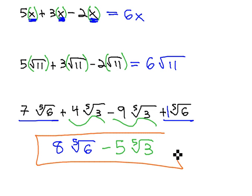And we have our final answer: 8 times the 5th root of 6 minus 5 times the 5th root of 3. We cannot simplify this expression anymore, as the radicals do not match. The 5th root of 6 and 5th root of 3 cannot be combined in any way with adding and subtracting.